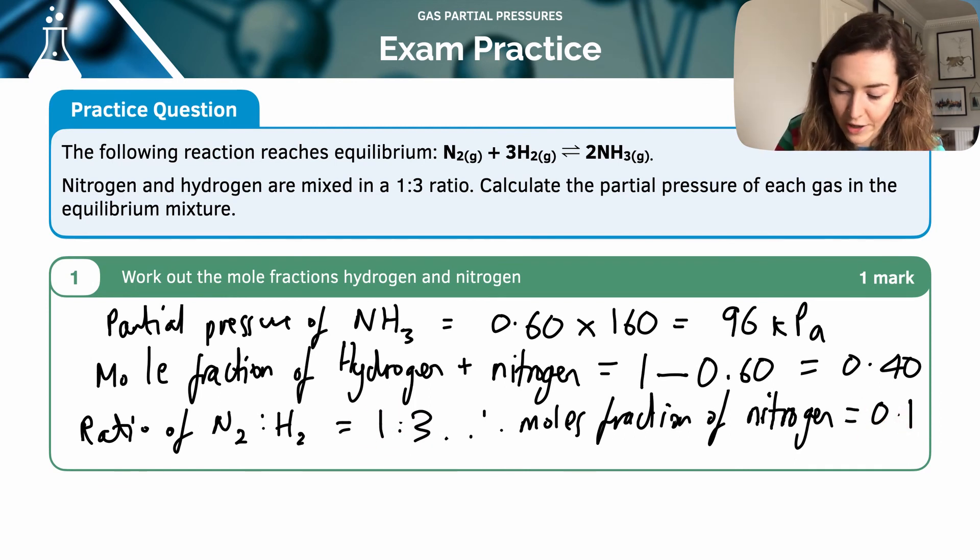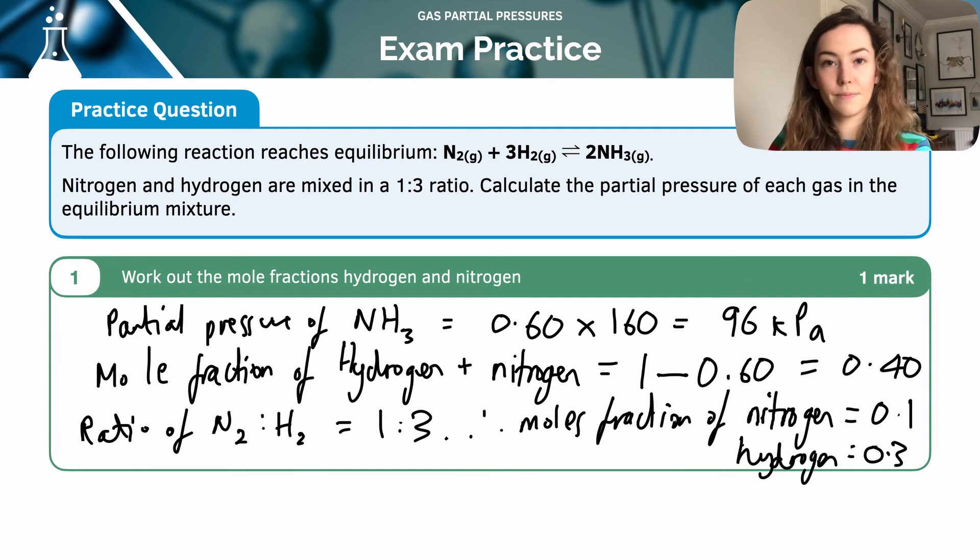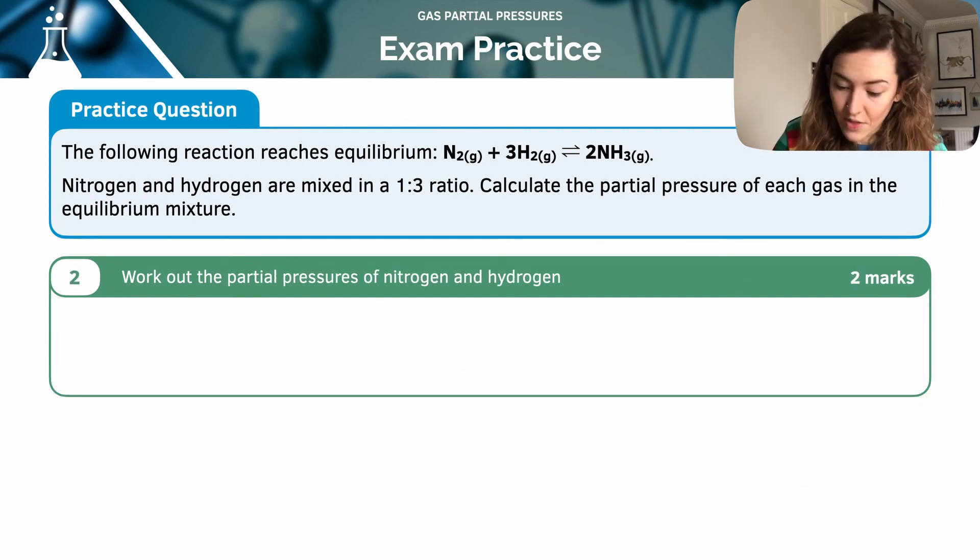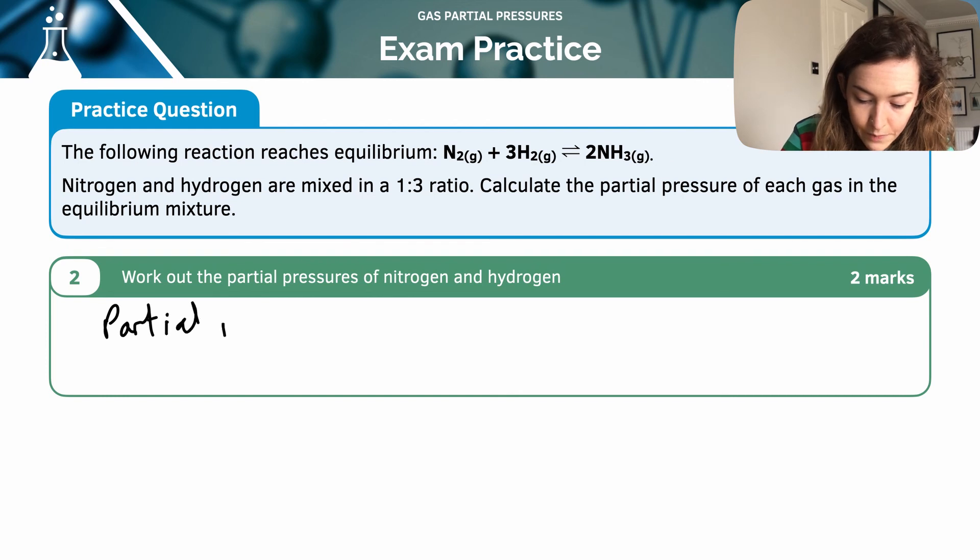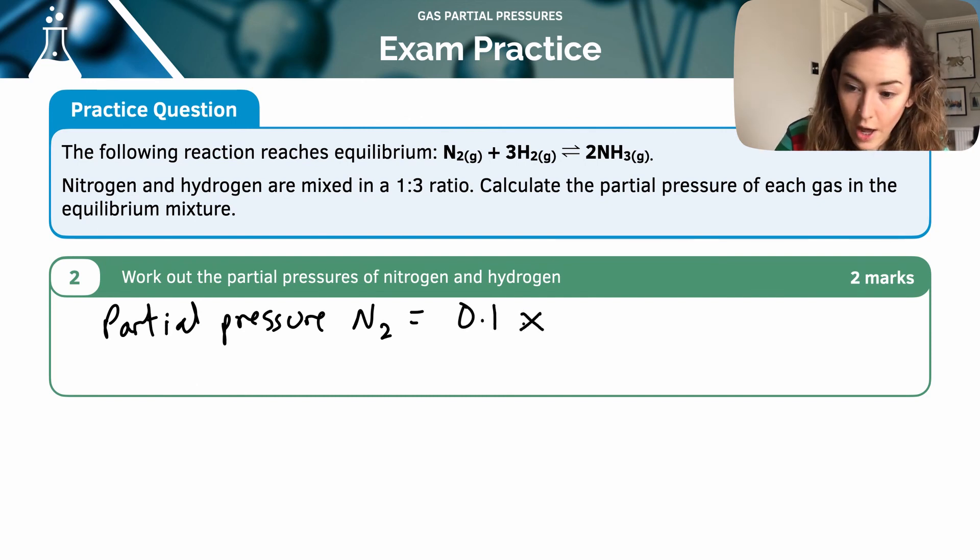And the mole fraction of hydrogen is therefore 0.3. So finally, the last step is to work out the partial pressure of N2, which is going to be that mole fraction that I've just worked out times my total pressure, 160. So that is 16 kilopascals.